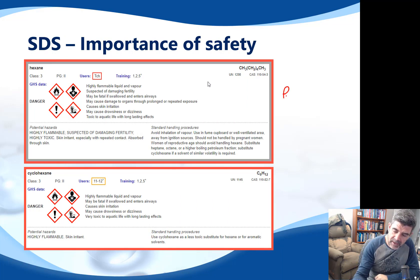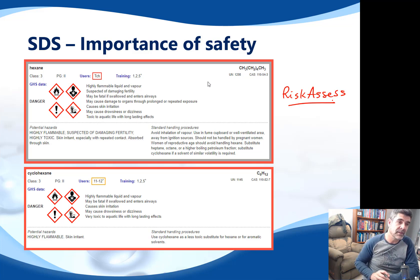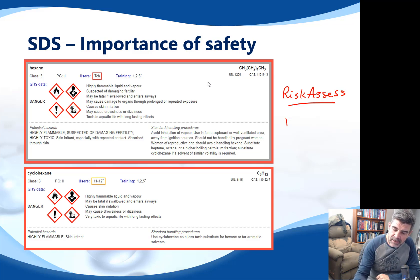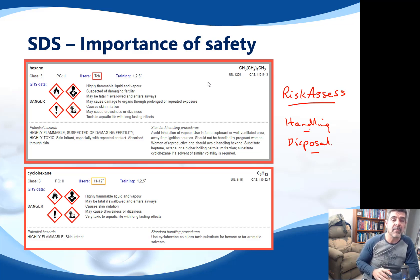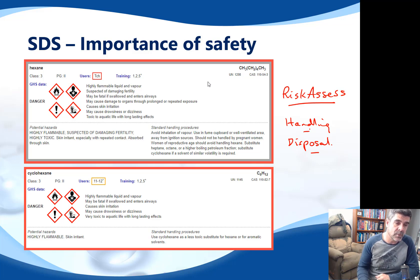RiskAssess is a great program for giving you lots of information very quickly about a range of different compounds. Safety issues are related to handling and disposal — we need to make sure that when we are assessing any chemical we are considering both of these together. It is very possible that you may be asked questions around identifying and mitigating risks when you are carrying out chemical procedures.